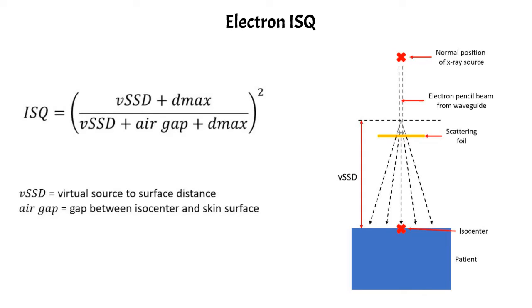And so the pencil beam starts to diverge from the scattering foil. And if we back project that beam divergence, you can actually see that the electrons appear to emanate from a point source that is located a little bit closer to the patient relative to the X-ray source. And the distance from that virtual point to the surface of your patient is your virtual SSD.